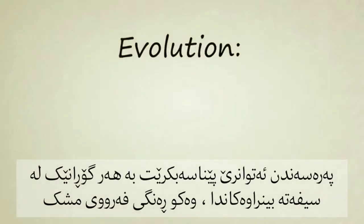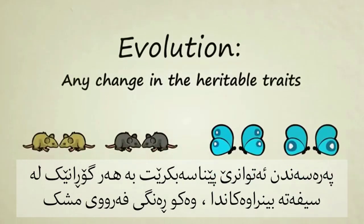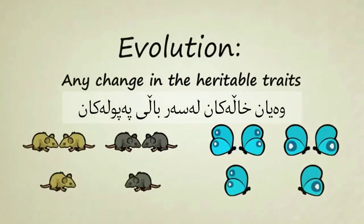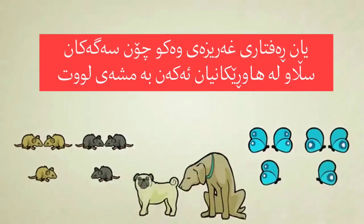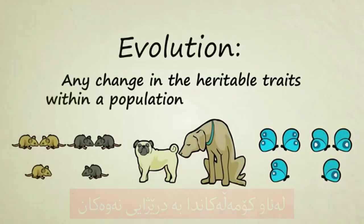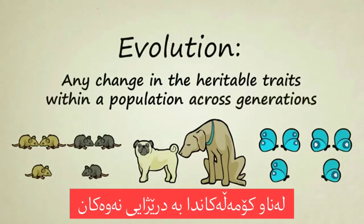In biology, evolution can be defined as any change in the heritable traits — those are physical traits like fur color in mice, spots on the wings of butterflies, or instinctive behaviors like the way that dogs greet their friends with a sniff — within a population across generations.